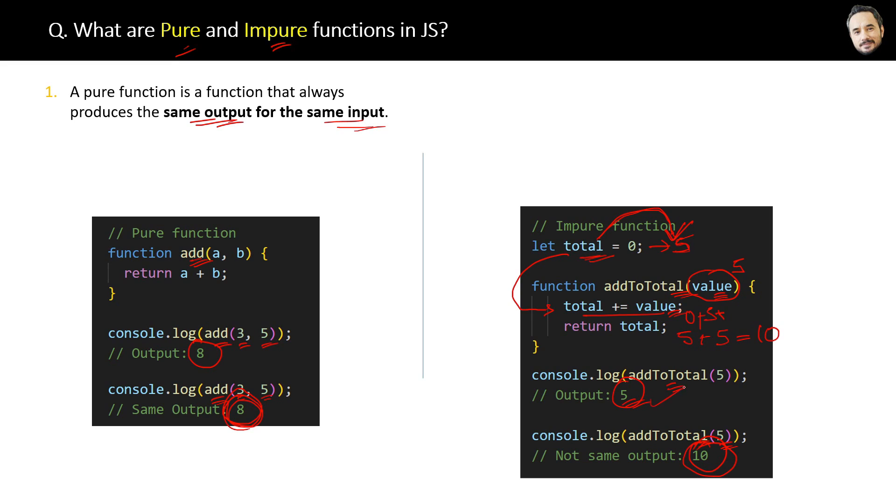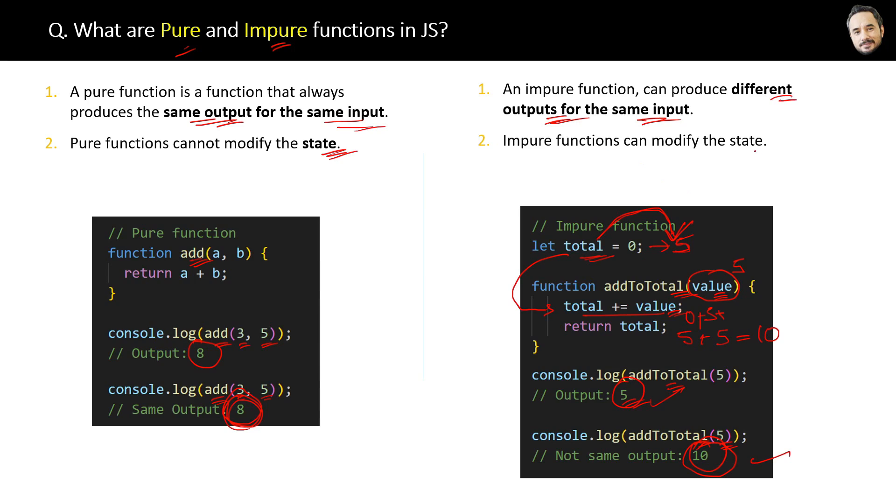So this is an impure function. The definition of an impure function is: an impure function can produce different outputs for the same input. So there are two more differences between them which we just noticed. First, pure functions cannot modify the state, but impure functions can modify the state, like we modified the state of the total variable.